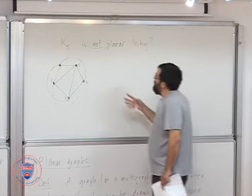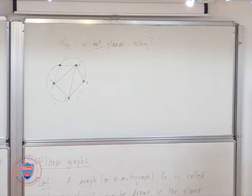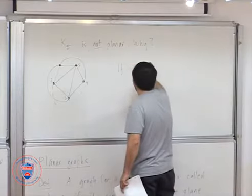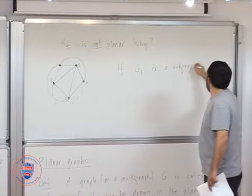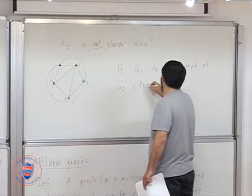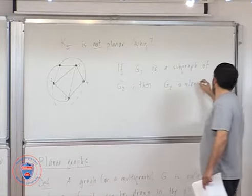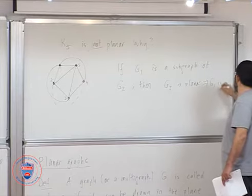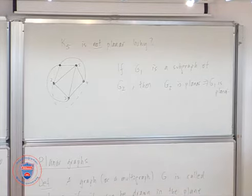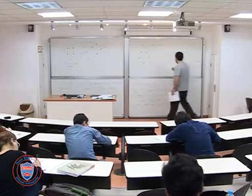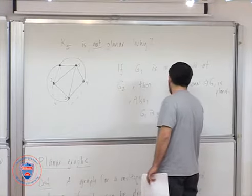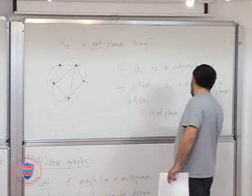This is what we will try to understand. It will turn out that if K5 is not planar, K6 cannot be. Because if you can draw K6, K5 will be sitting in there. So if G1 is a subgraph of G2, then G2 is planar implies G1 is planar.